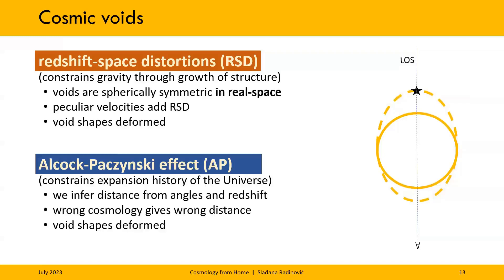This, however, is not a bug. It is a feature because if we can model these two, and we think we can, assuming that voids should be spherically symmetric in the ground truth, we can use these effects to constrain the growth of structure as well as the nature of dark energy.